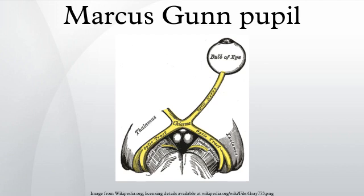The Marcus Gunn pupil is a relative afferent pupillary defect indicating a decreased pupillary response to light in the affected eye. In the swinging flashlight test, a light is alternately shone into the left and right eyes. A normal response would be equal constriction of both pupils regardless of which eye the light is directed at, indicating an intact direct and consensual pupillary light reflex. When the test is performed in an eye with an afferent pupillary defect, light directed at the affected eye will cause only mild constriction of both pupils, while light in the unaffected eye will cause a normal constriction of both pupils.